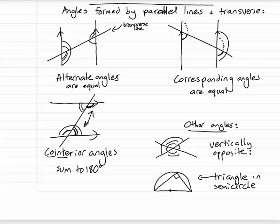And if I draw a triangle in a semicircle, so from the two edges of the circle to anywhere on the outside of the circle, that angle that touches the outside of the circle there will always be a right angle.